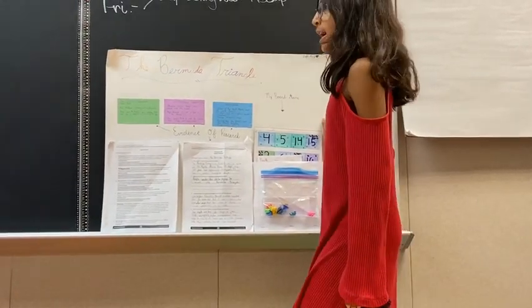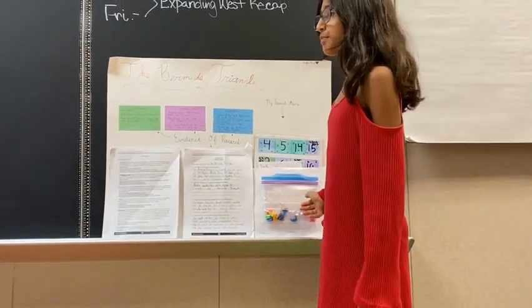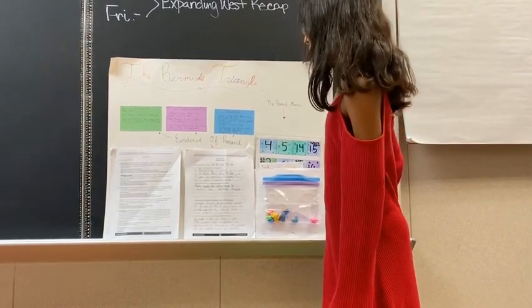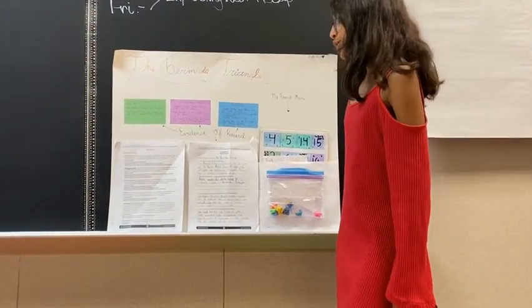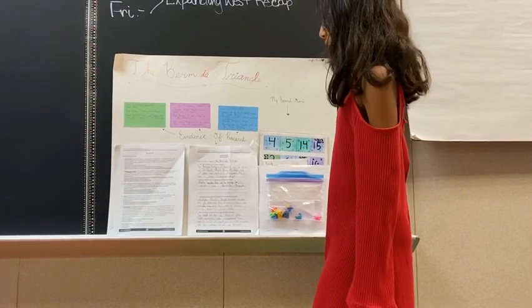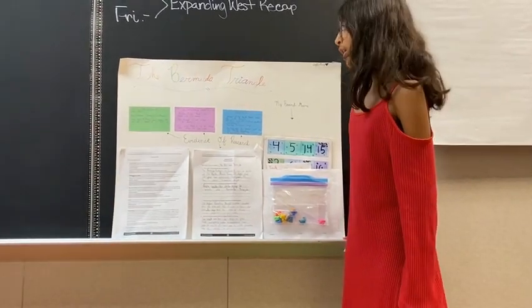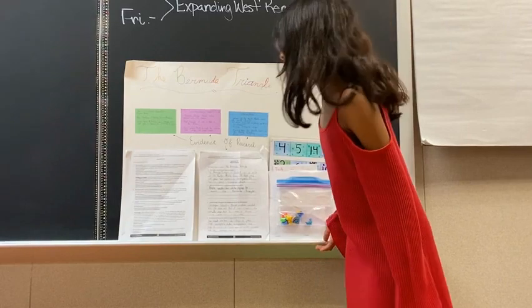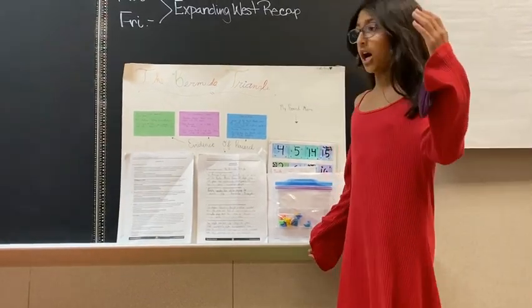Number one was human error, like them getting lost, and another one was bad weather like lightning, storms, thunder. And another one was rogue waves. They're really common in that area and they're like really big waves that can get a height of 50 to 80 feet high.